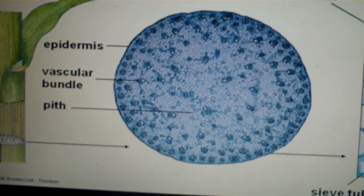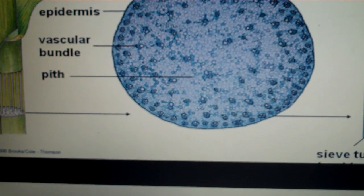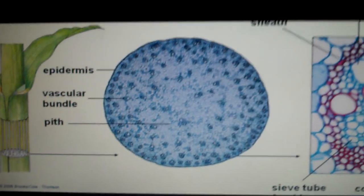There is no division of the ground tissue. We do have a pith, however there really isn't a clear distinction between the cortex and the pith.